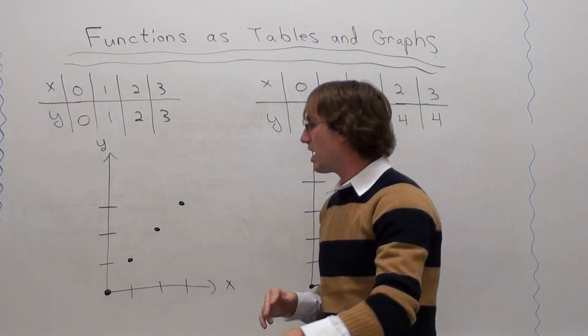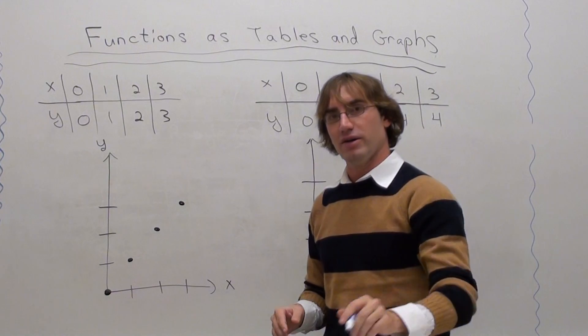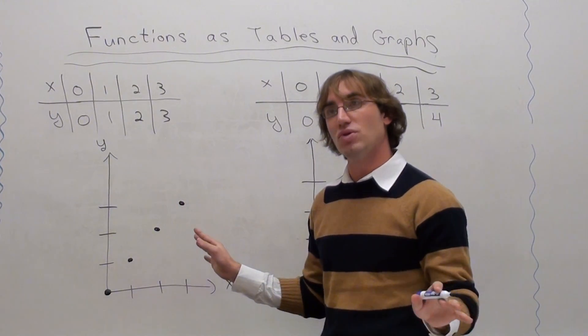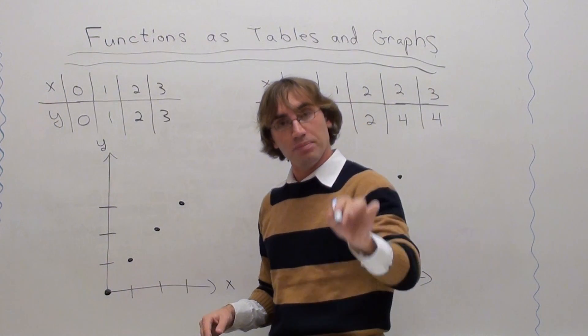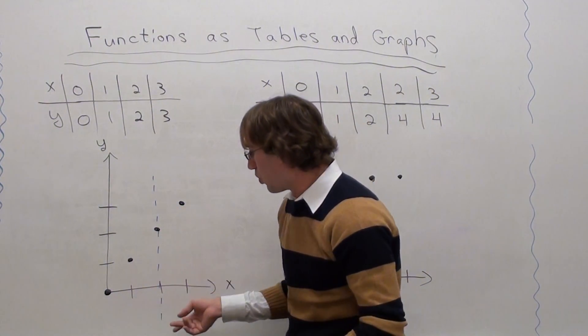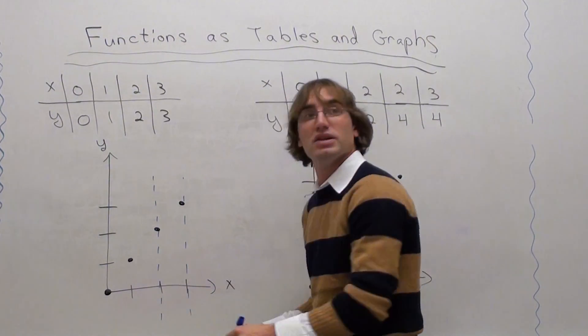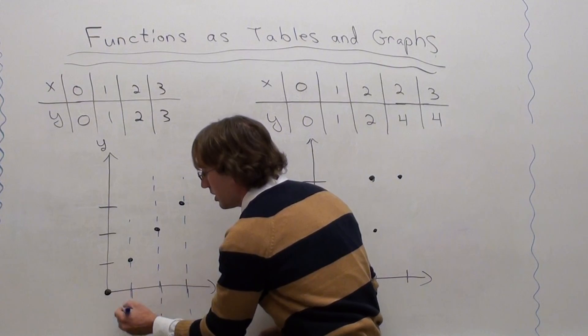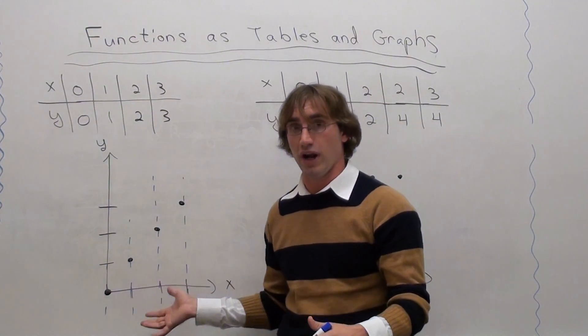And if I take a vertical line anywhere, anywhere on these points, anywhere on these graphs, I can see - vertical line, by the way, is a line that goes up and down. If I take a vertical line anywhere, it will only touch one point. It's only touched one point. It hasn't touched more than one point, the whole graph.